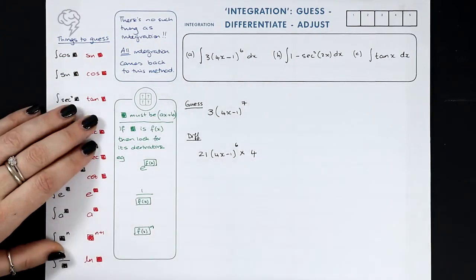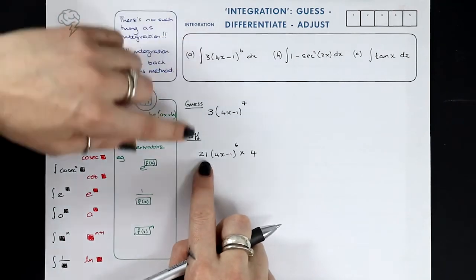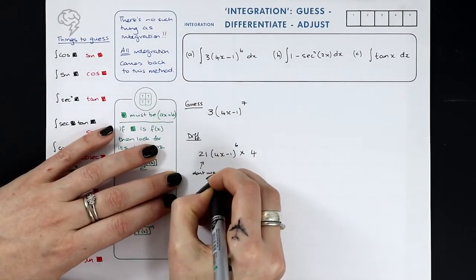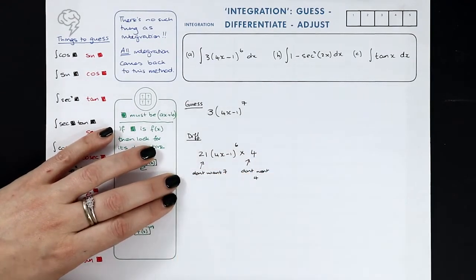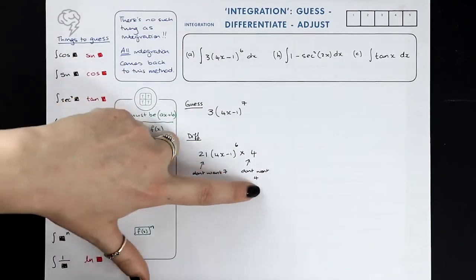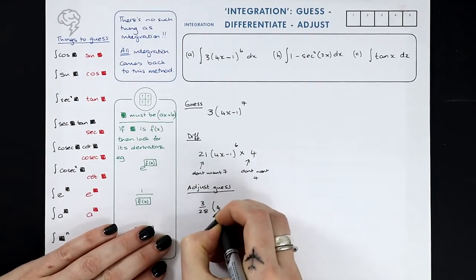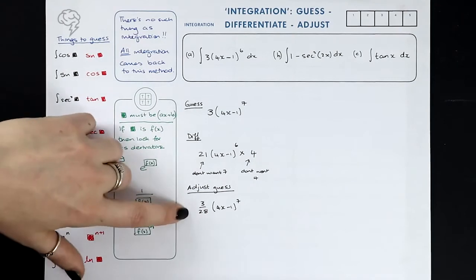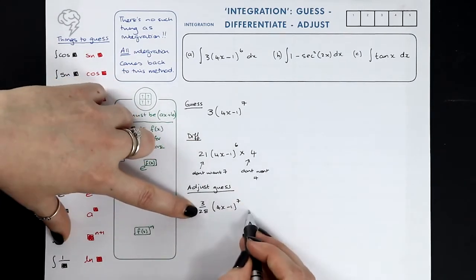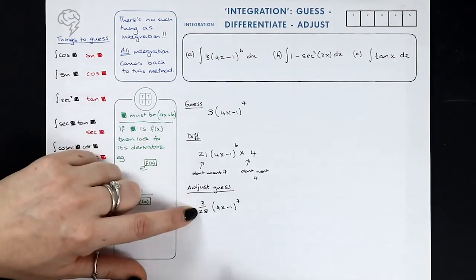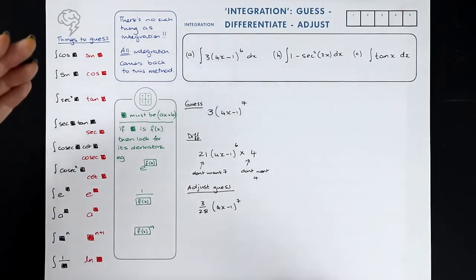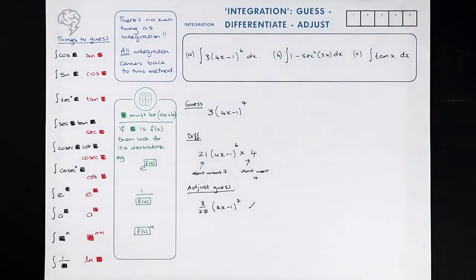That's not what I wanted — I don't want the 7 that came down, and I don't want the 4. So let's make an adjustment to our original guess: let's divide it by 28. Now when we differentiate, the 7 comes down and cancels with part of the 28, this changes to a 6, and then we multiply by 4 — but that cancels with the 4 in the 28, because 7 times 4 makes 28, which cancels with the 28 I put there. That's the adjustment needed, so I've now solved the integral.